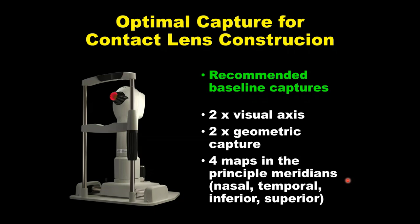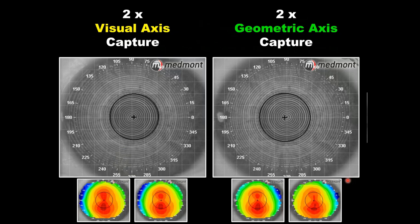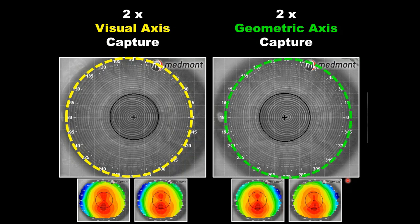The first two captures are on the visual axis. The visual axis is the patient's line of sight, giving us an understanding of what the patient is actually looking through in terms of corneal power — where is their fixation point and the distribution within the pupil from that center point. The geometric capture is where we center the placido reflection to the geometric axis of the eye, not the visual axis.